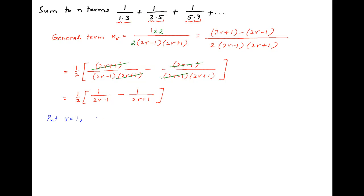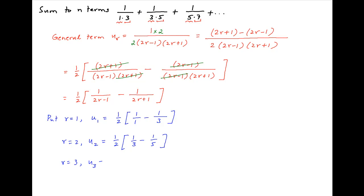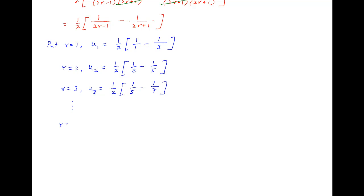Now put r equal to 1: we get u1 equal to half of in brackets 1 minus 1 upon 3. Put r equal to 3: we get u3 equal to half of in brackets 1 upon 5 minus 1 upon 7. And so on. Put r equal to n: un is equal to half of in brackets 1 upon 2n minus 1 minus 1 upon 2n plus 1.